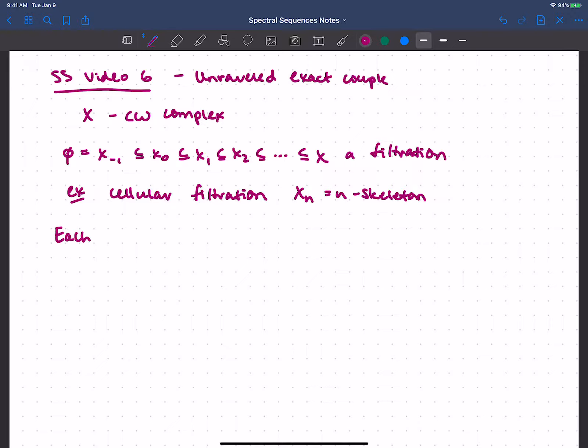Now given this filtration, each inclusion, let's call it XP minus 1 sitting inside XP, well this is a subspace, and assuming that it's a nice enough inclusion, this induces a long exact sequence in homology. Of course we also get a long exact sequence in cohomology, but I'm going to stick with homology for now, so that we're closer to the resources in Hatcher, Mosher, and Tangora.